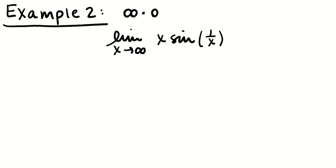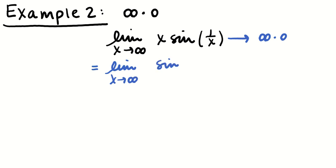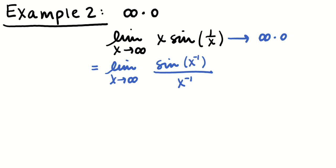Here's one I really like. This is an infinity times 0 limit. As x approaches infinity, x goes to infinity and 1/x goes to 0, and we know sine of 0 is 0, so this is infinity times 0 — an indeterminate form. I can't use L'Hôpital's rule on it because there's no division. But if I rewrite using division, this is the limit as x approaches infinity of sine(1/x) divided by x to the negative 1. This goes to 0/0, and in the world of derivative taking, it's much easier to write x to the negative 1 than 1/x.